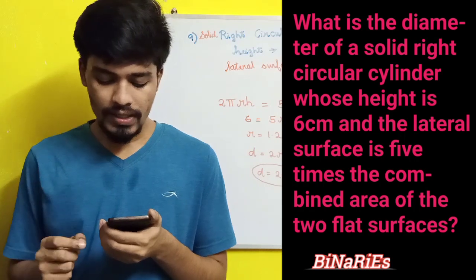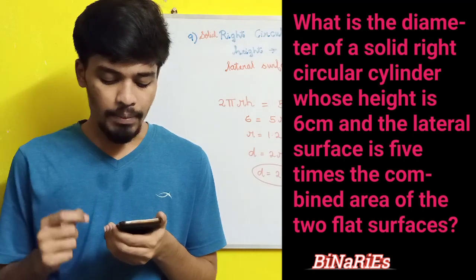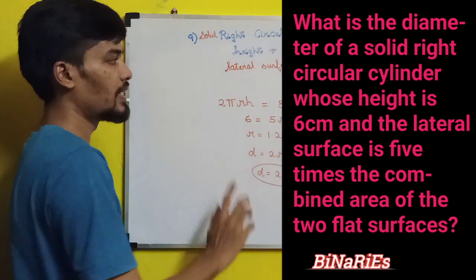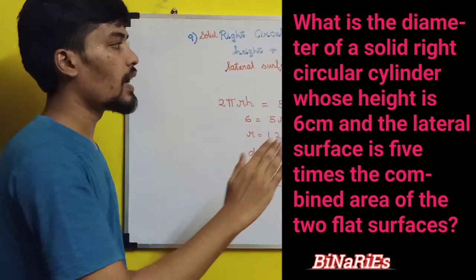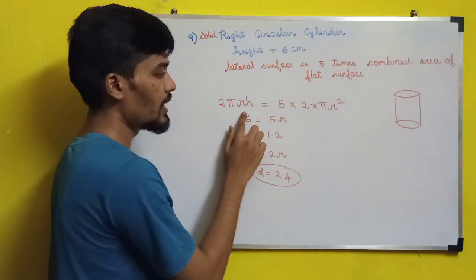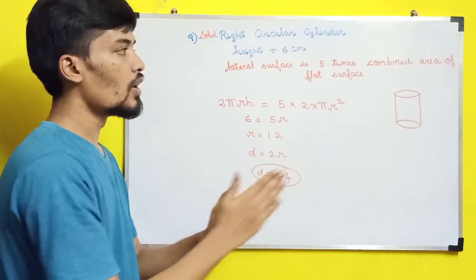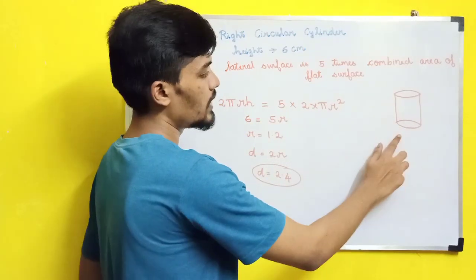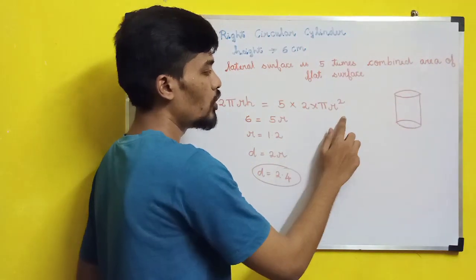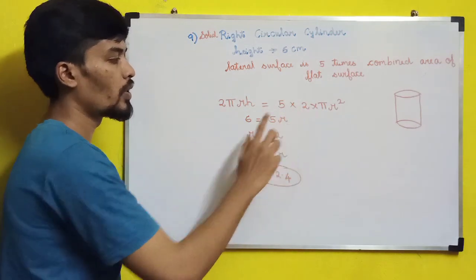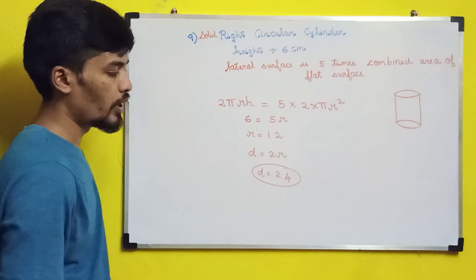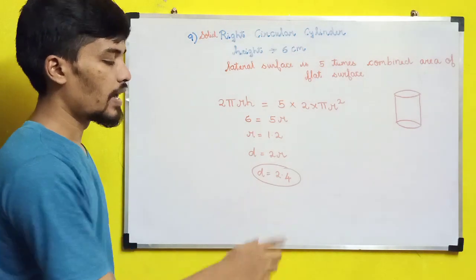What is the diameter of a solid right circular cylinder with height 6 cm, given that the lateral surface area is five times the combined area of the two flat surfaces? Lateral surface area = 2πrh. The flat surfaces are two circles, so combined area = 2πr². Setting 2πrh = 5 × 2πr², the 2πr cancels, leaving h = 5r. Substituting h = 6: 6 = 5r, so r = 1.2 cm. Diameter = 2 × 1.2 = 2.4 cm.